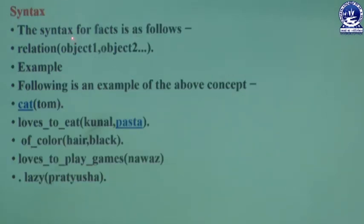The syntax for a fact is as follows: the relation name, then a bracket, within the bracket object1, object2, up to objectN. When writing a fact, it must start with a relationship name that begins with a lowercase letter, followed by brackets containing the different object names separated by commas. The object names may also start with a digit or consist of characters enclosed in quotes.